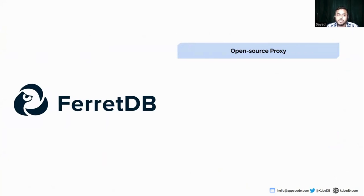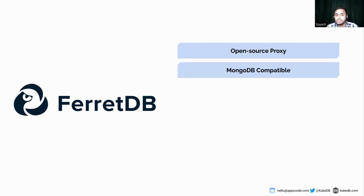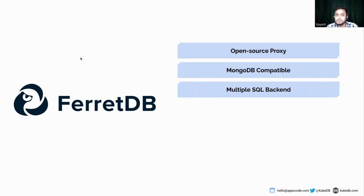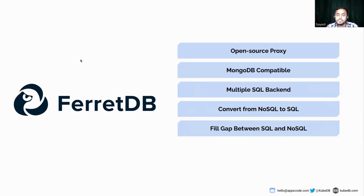What is FerretDB? FerretDB is an open source proxy that translates MongoDB wire protocol queries to SQL. FerretDB is MongoDB compatible with MongoDB drivers and can be used as a direct replacement of MongoDB 5.0 and above. Currently FerretDB supports PostgreSQL and SQLite as its SQL backend engine options. We can query in NoSQL format and FerretDB stores that in SQL format in its backend database. Being open source, we can implement different types of advanced query options according to our needs. Basically, FerretDB fills the gap between SQL and NoSQL databases.